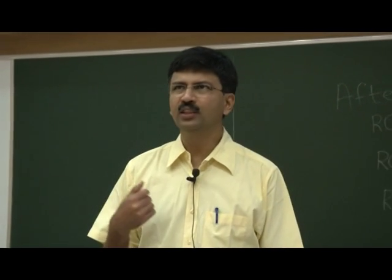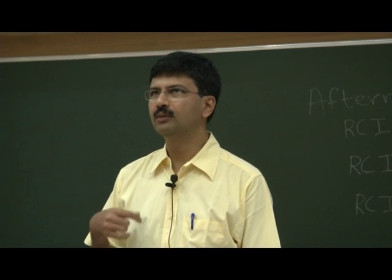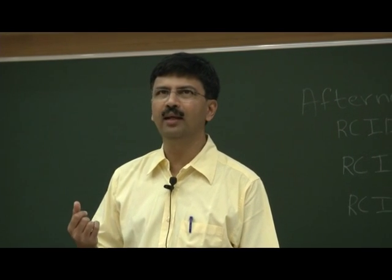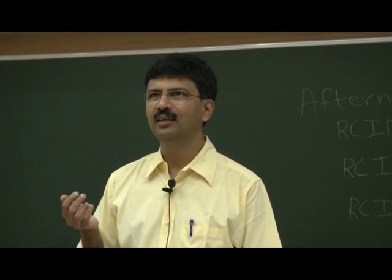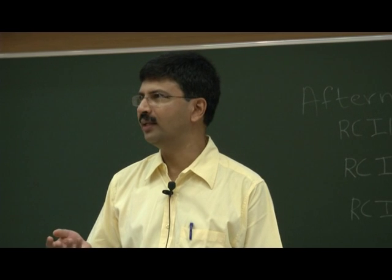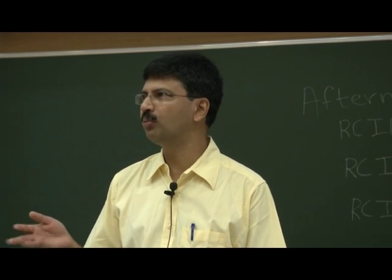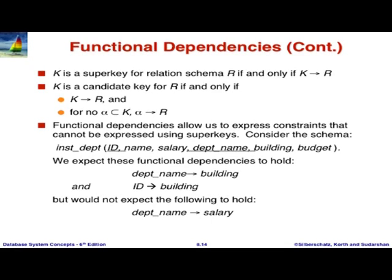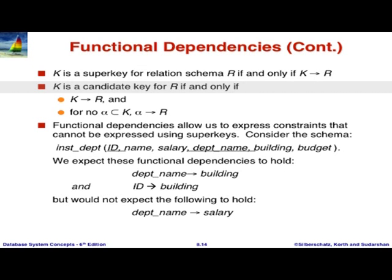What kinds of things can we do with functional dependencies? When you use primary key dependencies, that is a special case of functional dependencies. If you have a particular key functionally determining all the attributes of a schema, then that key is a super key, and a candidate key is a minimal one.